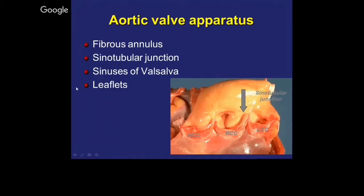The aortic valve, just like the mitral valve, is not just the valve. It's got a fibrous annulus, there's a sinotubular junction, the sinus of Valsalva, and then the actual leaflets. You can see here the sinotubular junction, this is the non-coronary cusp, there's the right coronary cusp, and this is the left coronary cusp.